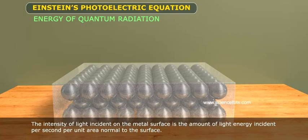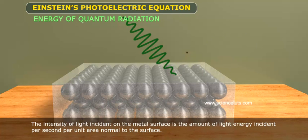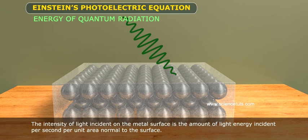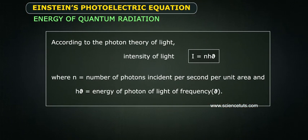The intensity of light incident on the metal surface is the amount of light energy incident per second per unit area normal to the surface. According to the photon theory of light, I equals to nhν.